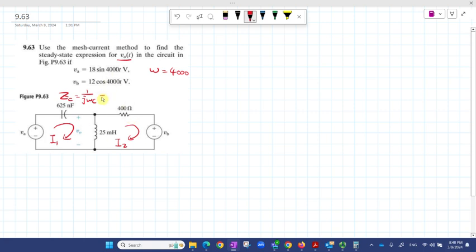So you plug in the number, this one equals negative j400. And for the downside, this is the impedance for the inductor, equals jωL. If you plug in the number, this one equals j100.